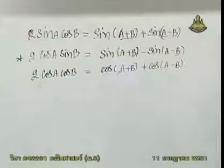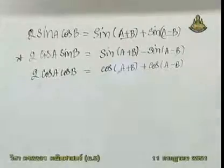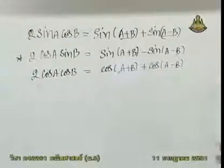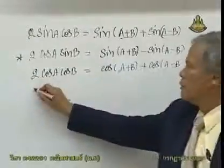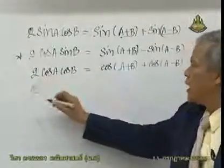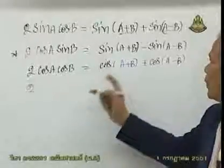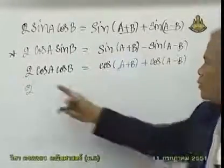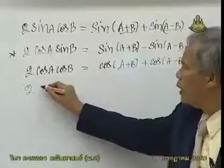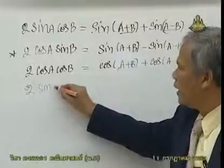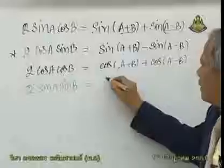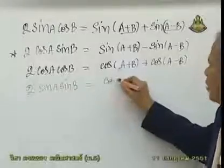ของฝ่ายแผนกวิทยาศาสตร์เนี่ย ถ้าเรียนแผนกวิทยาศาสตร์ นักเรียนต้องให้ได้ เพราะว่านักเรียนจะไปเจออีกทีในเรื่องของแคลคูลัส. ซึ่งการ integrate บางครั้งเนี่ย มันจะต้องเปลี่ยนให้เป็นรูปผลบวก มันจะ integrate ได้ง่ายกว่าอยู่รูปผลคูณ. 2 sin a sin b ตัวนี้จะกลายเป็น cos(a-b) ลบ cos(a+b).